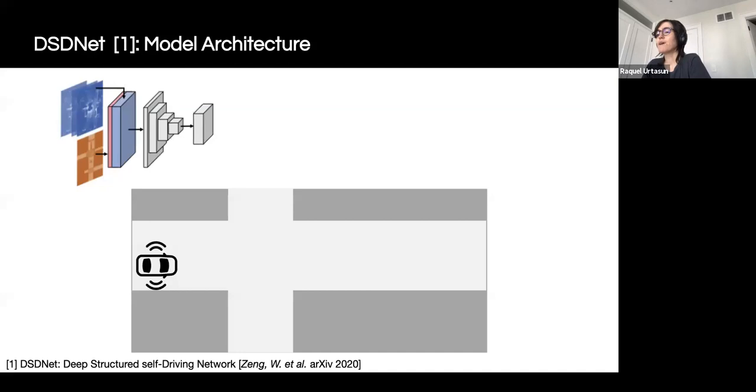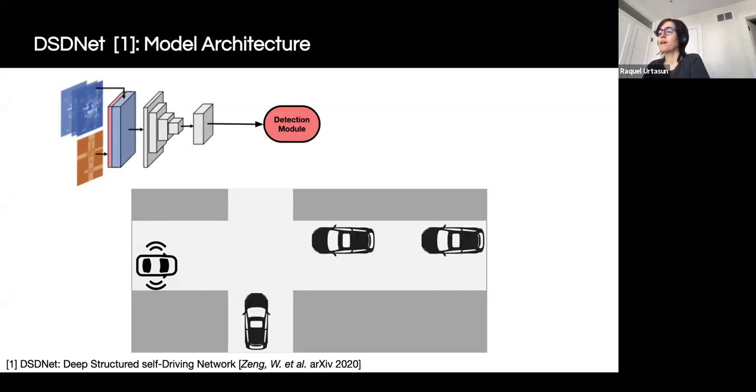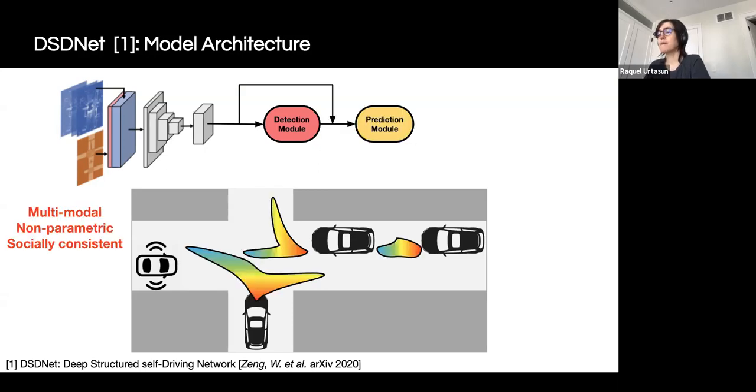Now, let's have a look at how our model works. Given lidar point clouds and an HD map as input as before, we have a neural network to produce backbone features, which will be shared across all our modules. We first use these features to predict detection results. For example, here we have three vehicles that have been detected. Our next step is to predict the future behaviors of all actors, as well as the uncertainties, which are shown as colorful regions in the figure below. Here, different colors mean different future time steps.